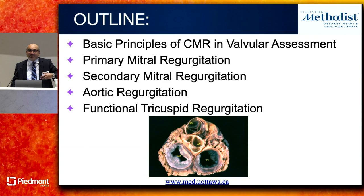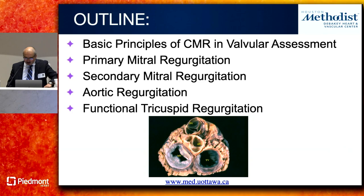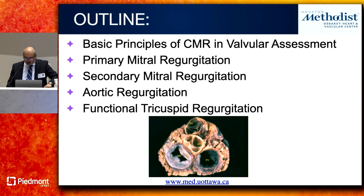What I'm going to do is talk about how we do valvular heart disease assessment by CMR and then go through specific lesions: primary mitral regurgitation, secondary MR where we look more at the health of the ventricle, aortic regurgitation, and functional tricuspid regurgitation — which is really the newest frontier.